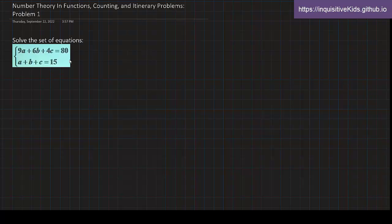Here, we can rewrite the first equation as 4 times the sum of a plus b plus c plus 2b plus 5c. And that's equal to 80.